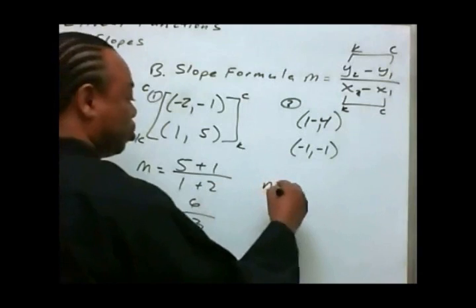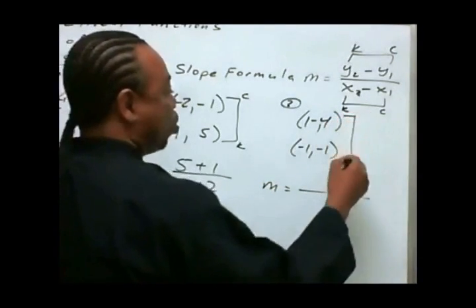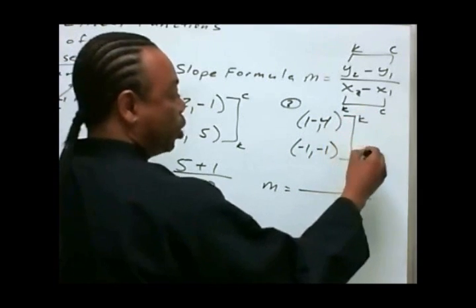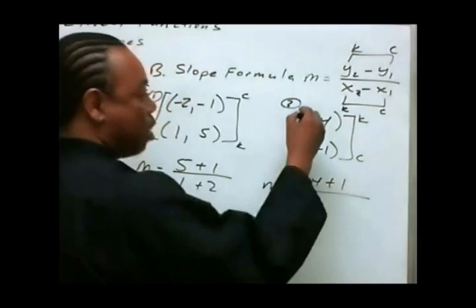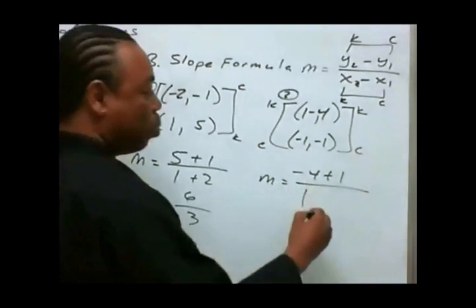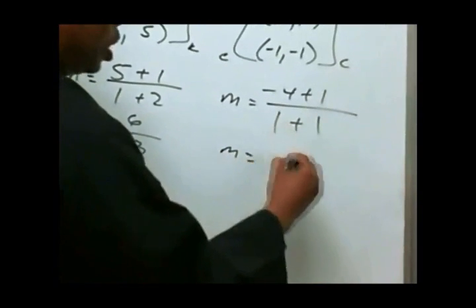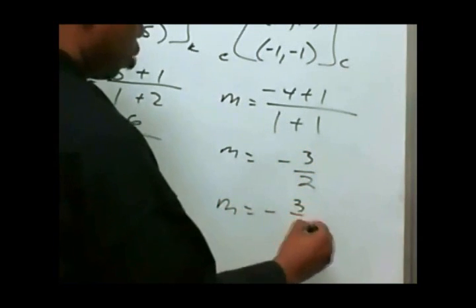For the second example with points one, negative four and negative one, negative one: we keep negative four and change negative one to positive one for the y's; we keep one and change negative one to positive one for the x's. We end up with negative three over two, so we would fall three and run two, or run two and fall three.